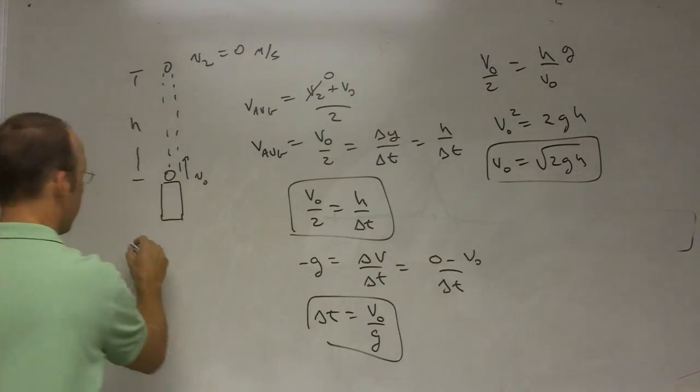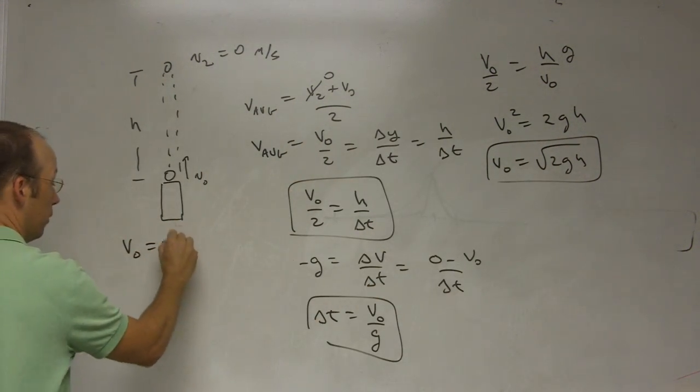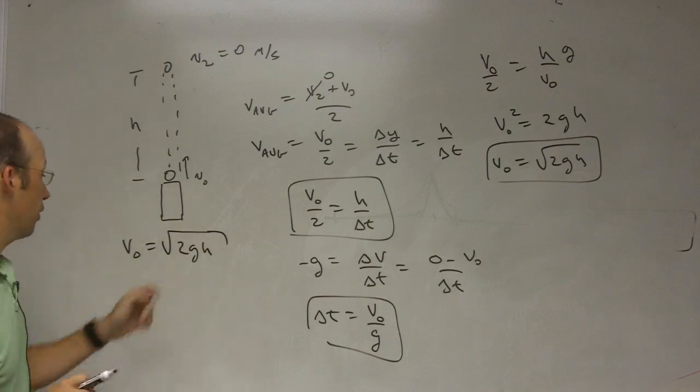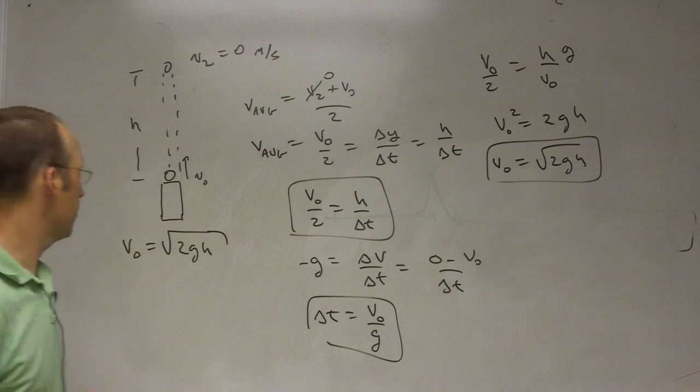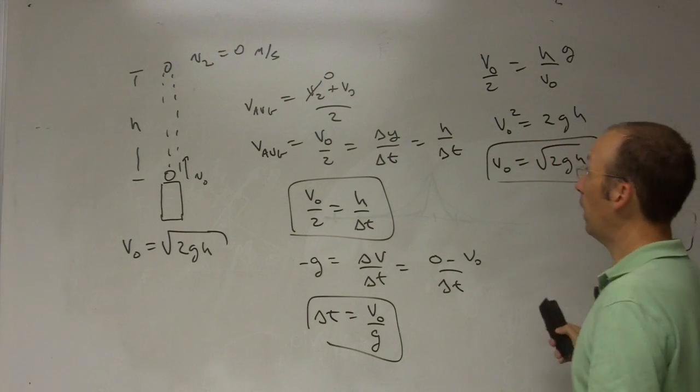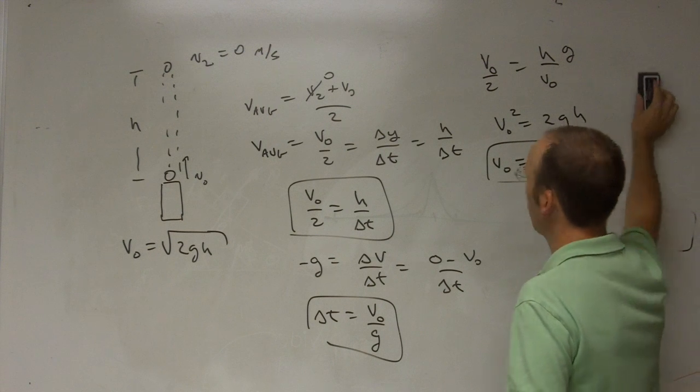Let me write that over here. So all we have to do is measure h. You can assume g has no uncertainty, and then we can determine the initial velocity. Okay, I'm going to erase this so I have room to do it the other way.